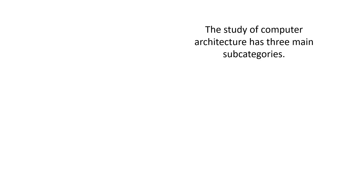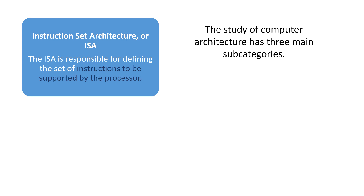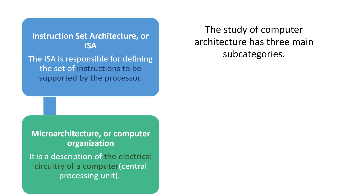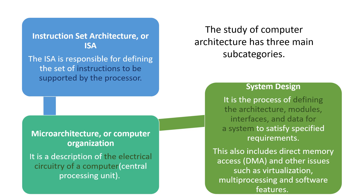The study of computer architecture has three main subcategories. The first is instruction set architecture, which defines the set of instructions to be supported by the processor. The second is microarchitecture, which describes the electrical circuitry of a computer — the central processing unit. The third is system design, which is the process of defining the architecture, modules, interfaces, and data for a system to satisfy specified requirements. System design also includes direct memory access (DMA) and other issues such as virtualization, multiprocessing, and software features.